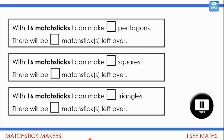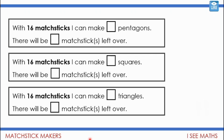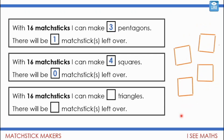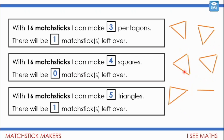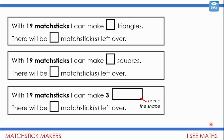Let's have a look. 16 matchsticks, how many pentagons? You can make three whole pentagons, with one matchstick left over — three lots of five is 15, one more is 16. How many squares? You'll be able to make four squares with none left over — four fours are 16. And triangles? You get five triangles, that's 15 matchsticks, with one left over.